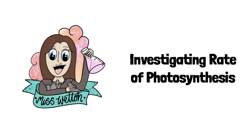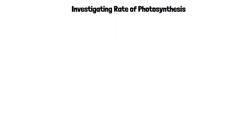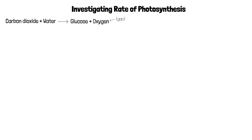In this video we'll look at how we can investigate the rate of photosynthesis. During photosynthesis, carbon dioxide and water are converted into glucose and oxygen, which is a gas. We can measure the rate of photosynthesis in different conditions by comparing the volume of oxygen produced in a certain time. The more oxygen is produced, the higher the rate of photosynthesis.